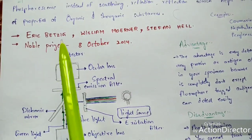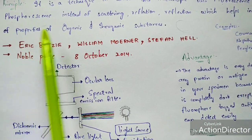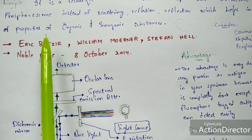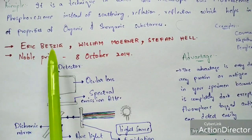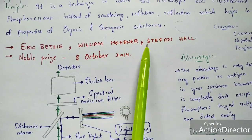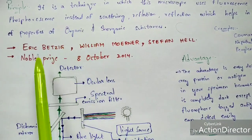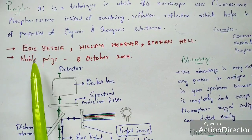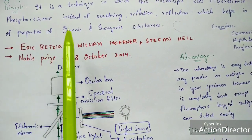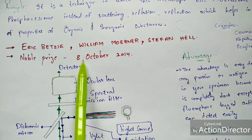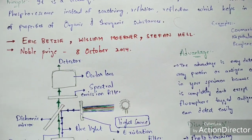Before entering the mechanism, let us look at the discovery. Fluorescent microscopy was first discovered by Eric Betzig, William Moerner, and Stefan Hell. These three scientists were awarded the Nobel Prize for the discovery of fluorescent microscopy on 8 October 2014.